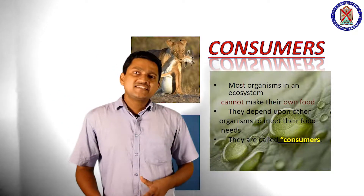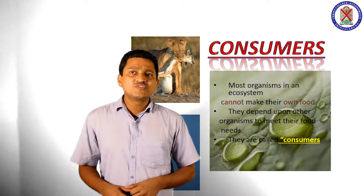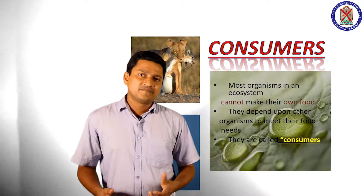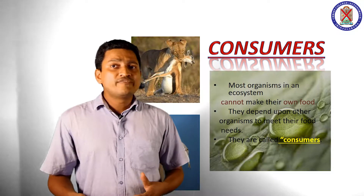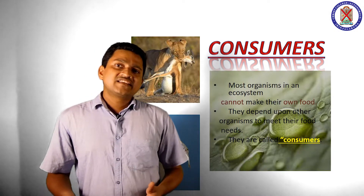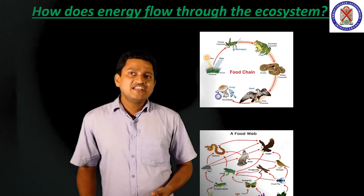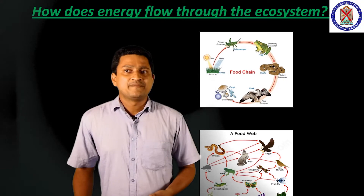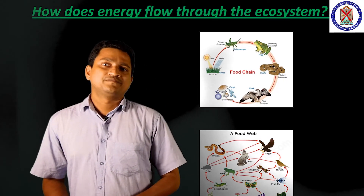How does energy flow through the ecosystem? The answer is that it flows through the food chain and food web, which we discussed earlier. Thank you.